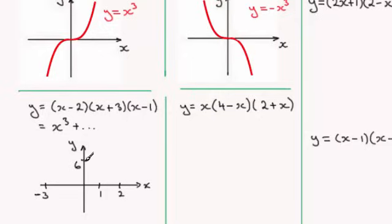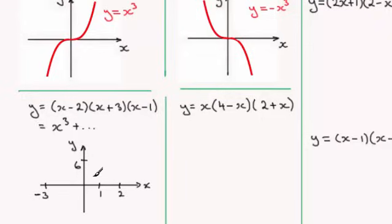So we should be able to draw the curve now. I know it's going to come up from the bottom left, rise through minus 3, pass through 6 on the y-axis, come down through 1, and then back up through 2.